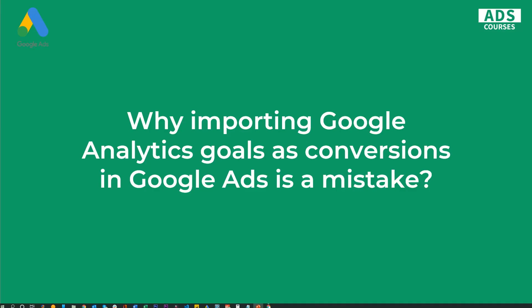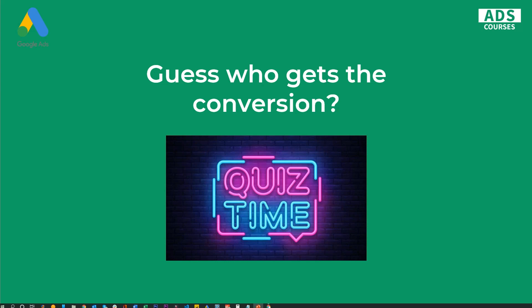The main question is: why is importing Google Analytics Goals as conversions in Google Ads a mistake? Whether it's a mistake or not is actually your decision, and it should be based on your approach to attribution. Because the differences between Google Analytics Goals and Google Ads conversion tracking are mostly about attribution — they use different attribution models. So before I explain how it all works, let's play a simple quiz and try to guess who gets the conversion in these situations.